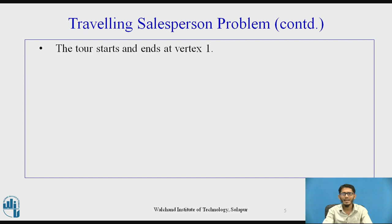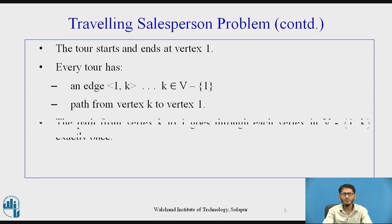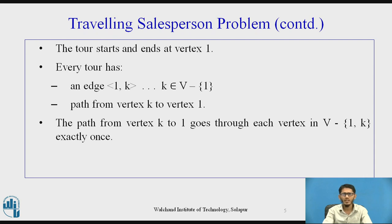The tour starts and ends at vertex 1, and every tour has an edge from 1 to some vertex k, where k belongs to V minus {1}, and a path from vertex k back to 1. This path from k to 1 goes through each vertex in V minus {1, k} exactly once, and it will be the shortest path distance from k through all those vertices ultimately reaching vertex 1. Thus the principle of optimality holds.